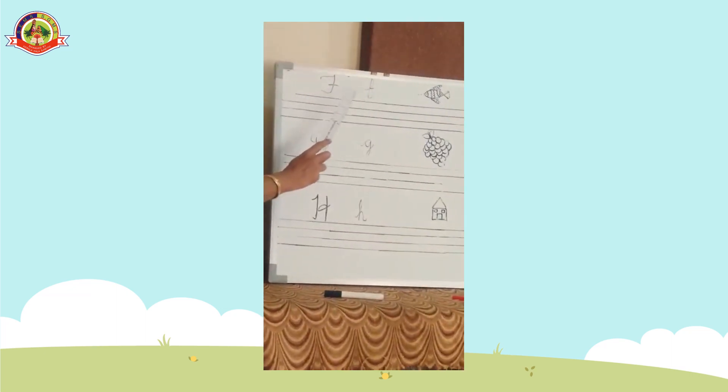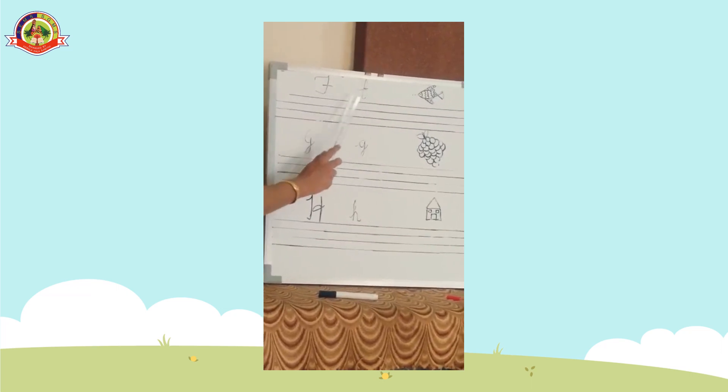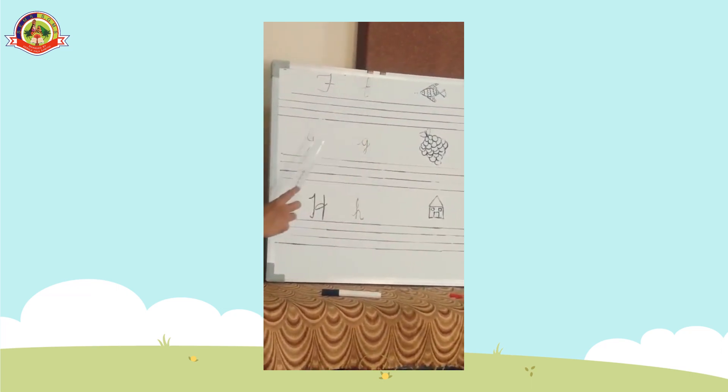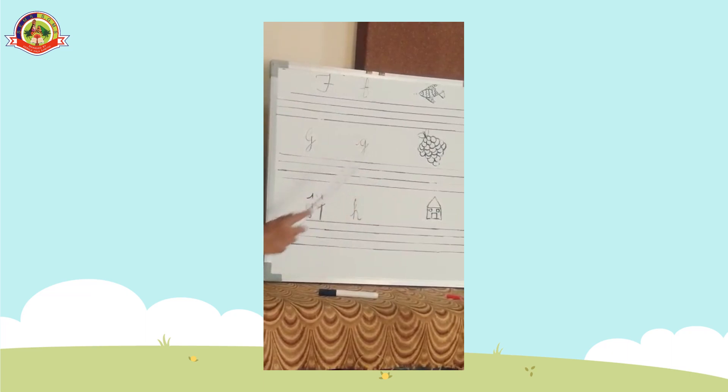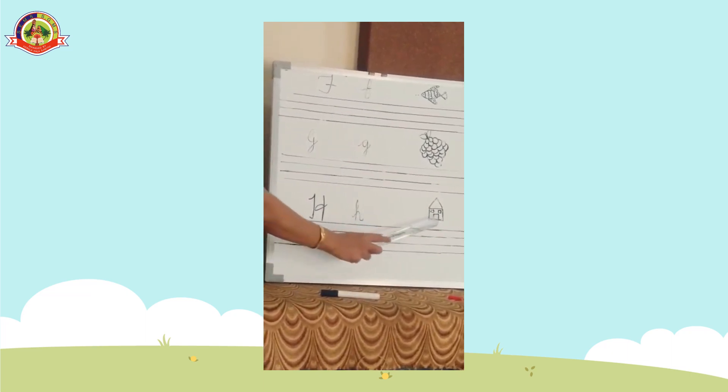In this session, I am here to teach you how to write capital and small cursive F for fish, G for grapes and H for house.